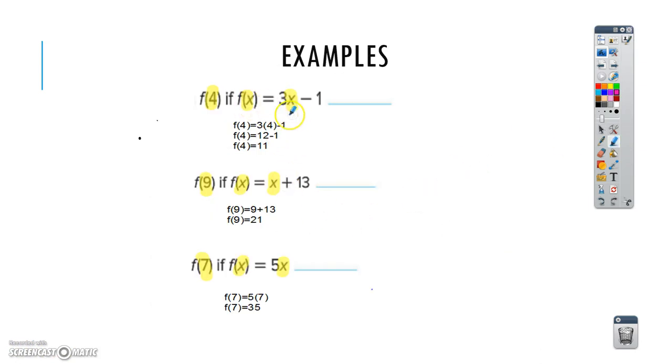Okay, so for our last example, you would plug in 4 for X on everything. So, f(x) equals 3x minus 1, so f(4) equals 3 times 4 minus 1.